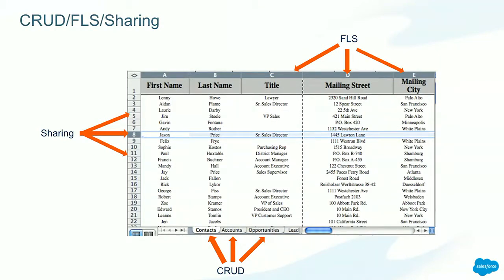Before we move on, let me introduce three concepts: CRUD, FLS, and sharing. CRUD is nothing but create, read, update, and delete — these are object-level permissions. Field level security defines access to the fields in your objects. Sharing defines access to the records within your object. So for example, if you wanted to give access to row five and six, then you would define sharing rules in your organization.